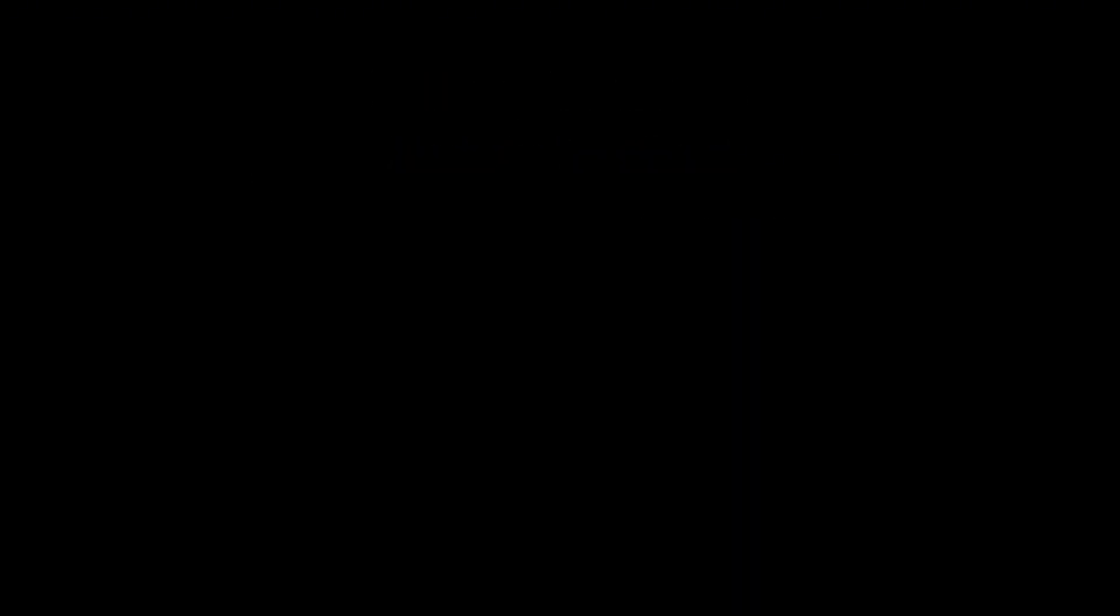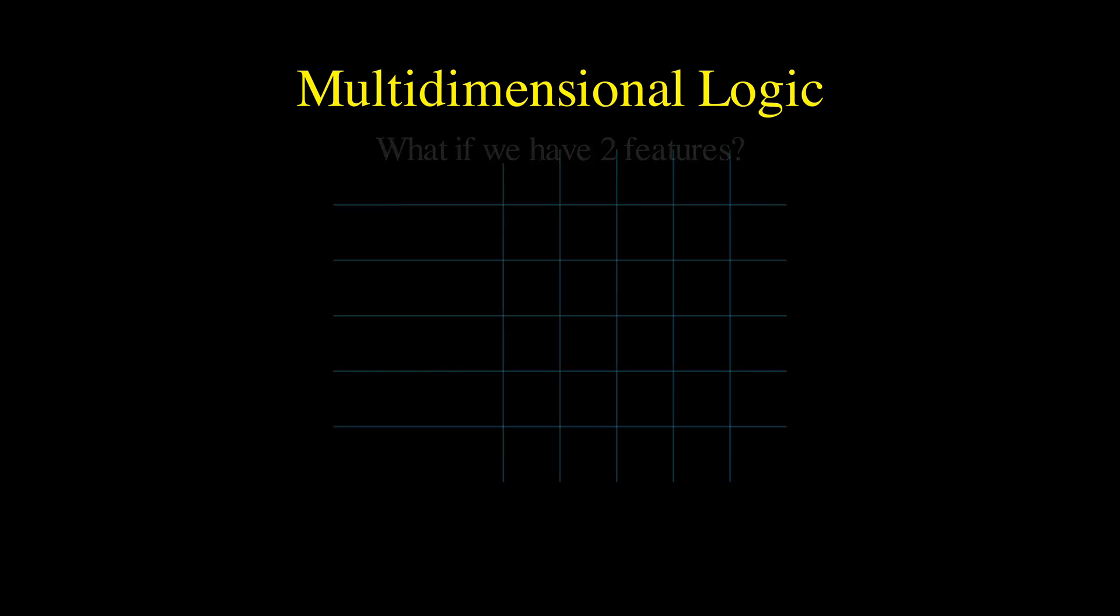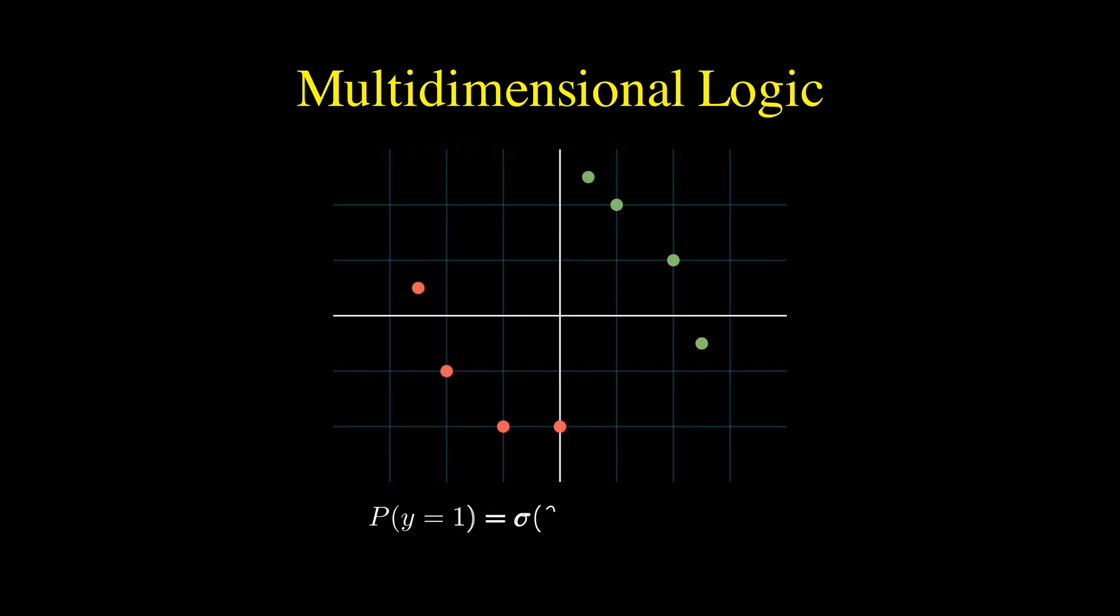Real-world problems often involve more than just one factor. Suppose we predict results based on two features, like hours studied and classes attended. Our data now lives on a 2D plane.